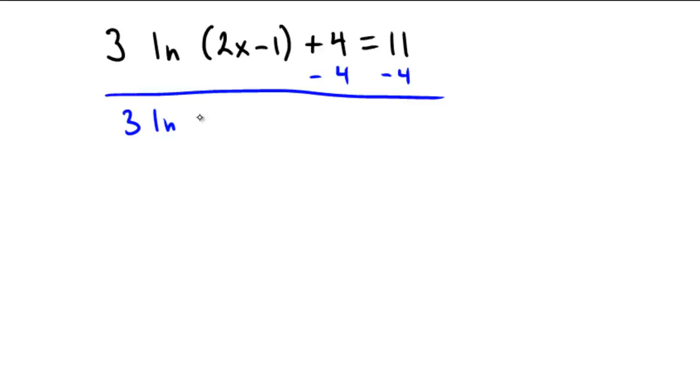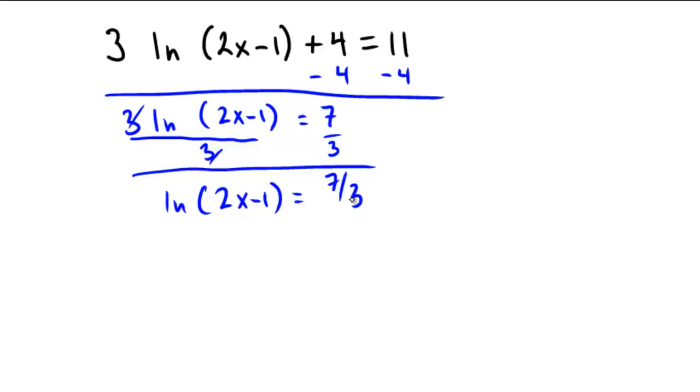So we get 3 ln 2x minus 1 equals 7. Divide both sides by 3. We're going to get some fractions here. That's ok, we're not scared. ln of 2x minus 1 equals 7 thirds.